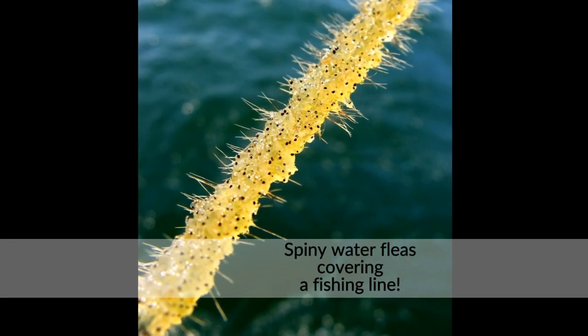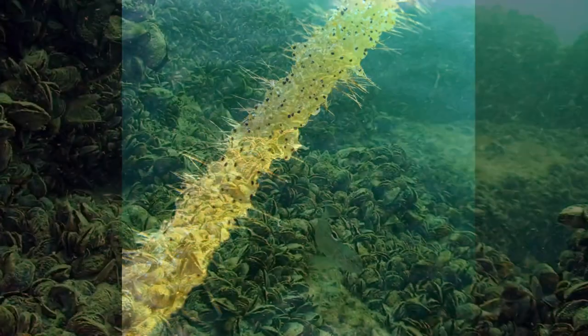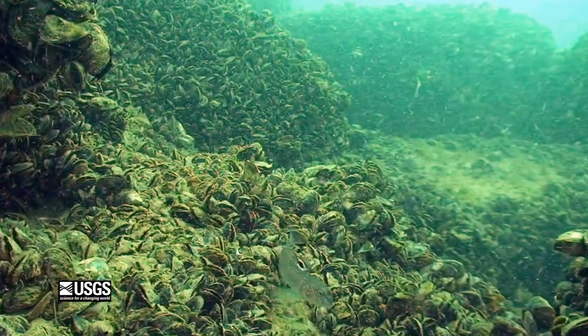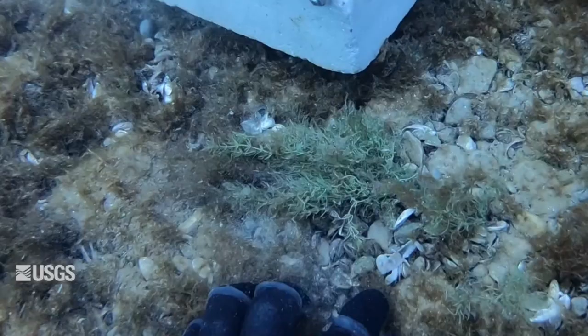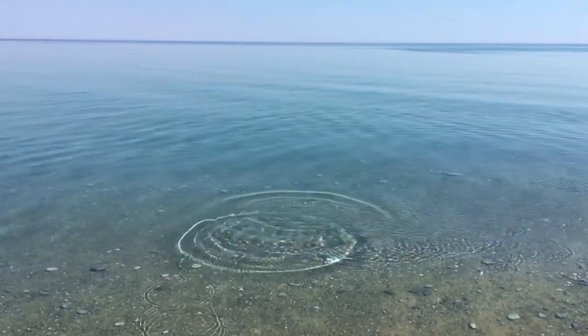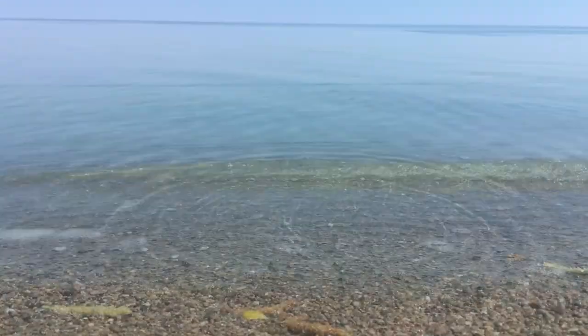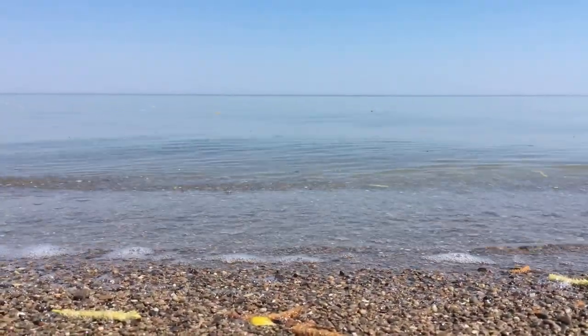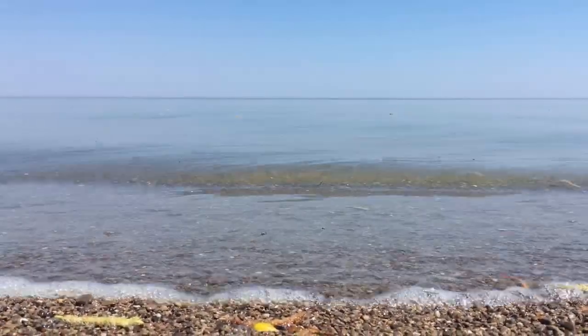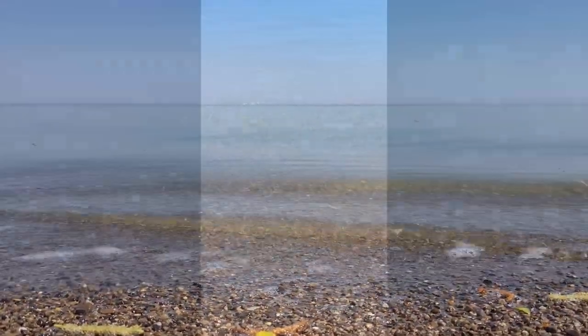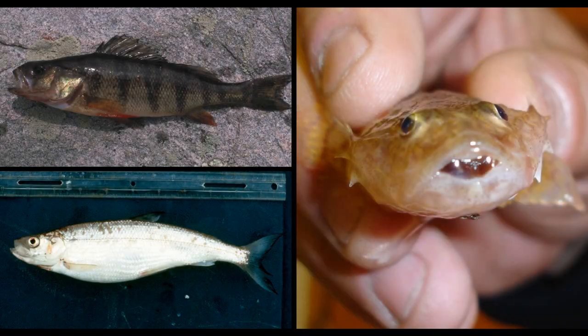Take zebra and quagga mussels, for example. These small mussels feed vigorously on phytoplankton. Consumption by the mussels has been so intense that they have noticeably cleared the water in the Great Lakes. Note that I said cleared, not clean, the water — clear water is not the same as healthy, clean water. The water has cleared because phytoplankton are much less abundant now. Unfortunately, less phytoplankton means less food for zooplankton and other primary consumers, which in turn means less food for prey fish and ultimately predator fish.